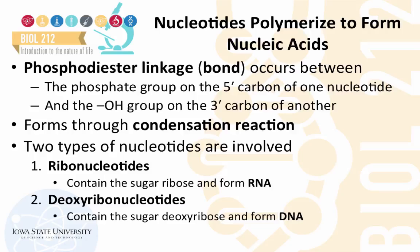The phosphodiester linkage occurs between the phosphate group on the 5' carbon of one nucleotide and the hydroxyl group on the 3' carbon of another nucleotide. This phosphodiester bond forms through a condensation reaction.